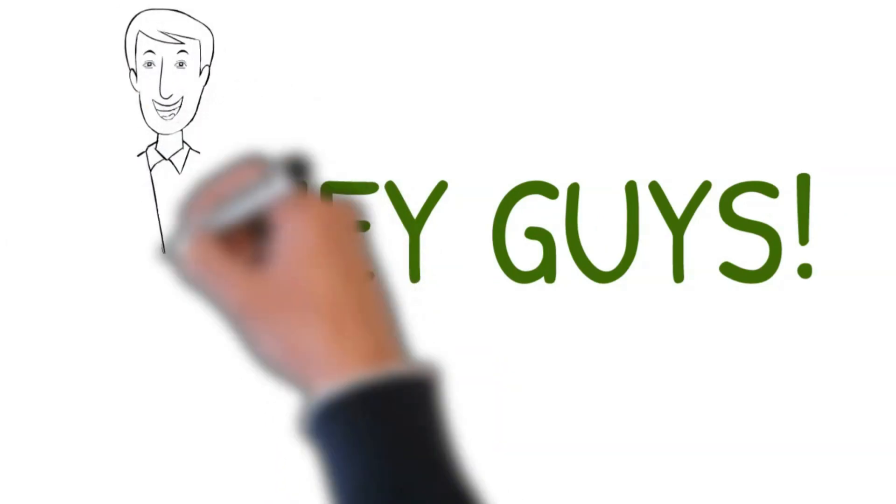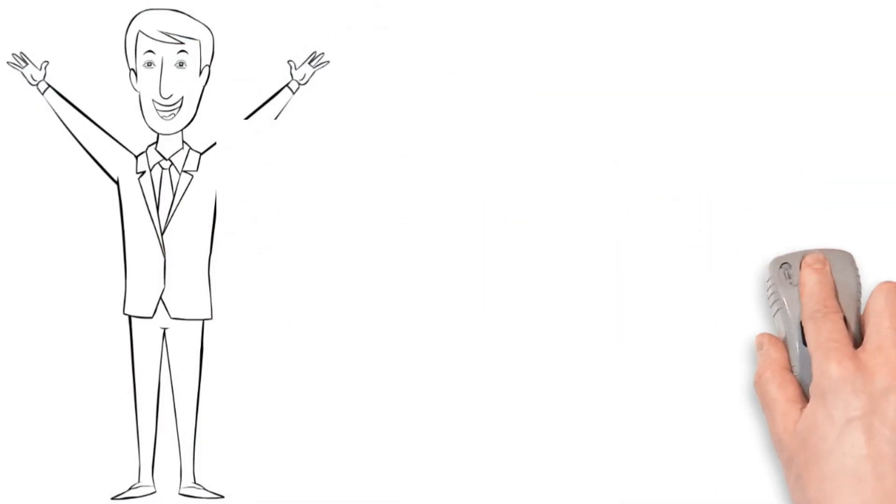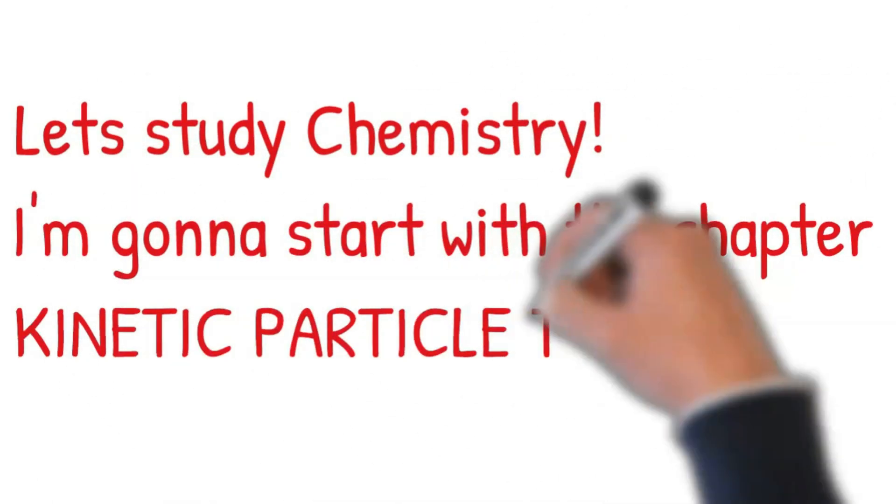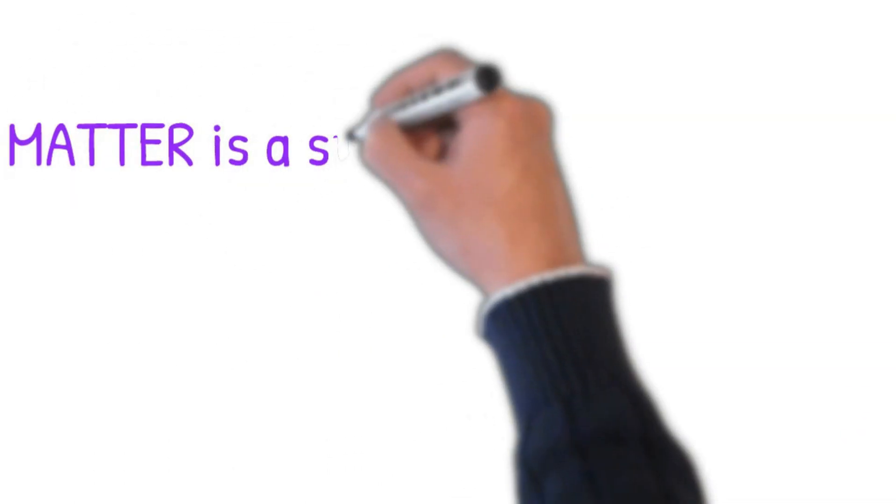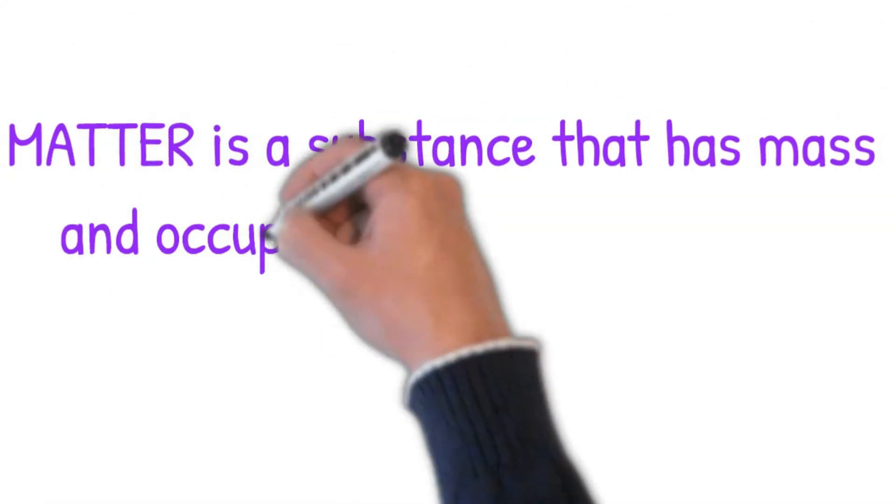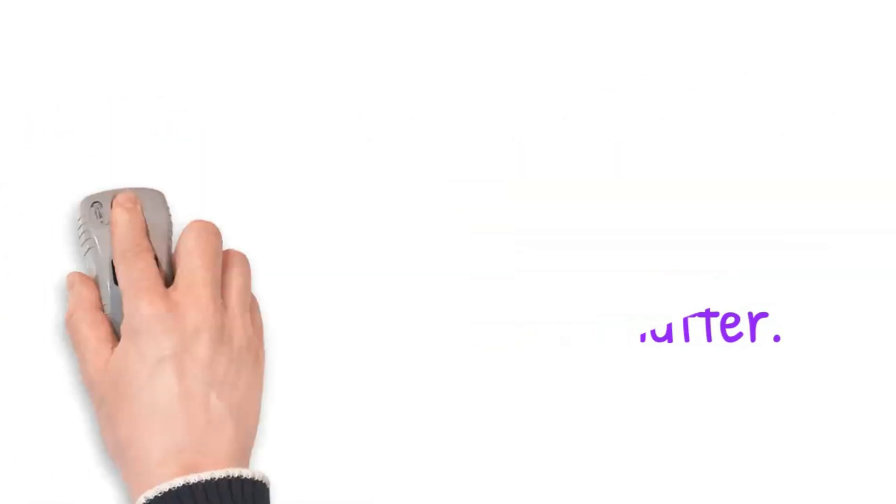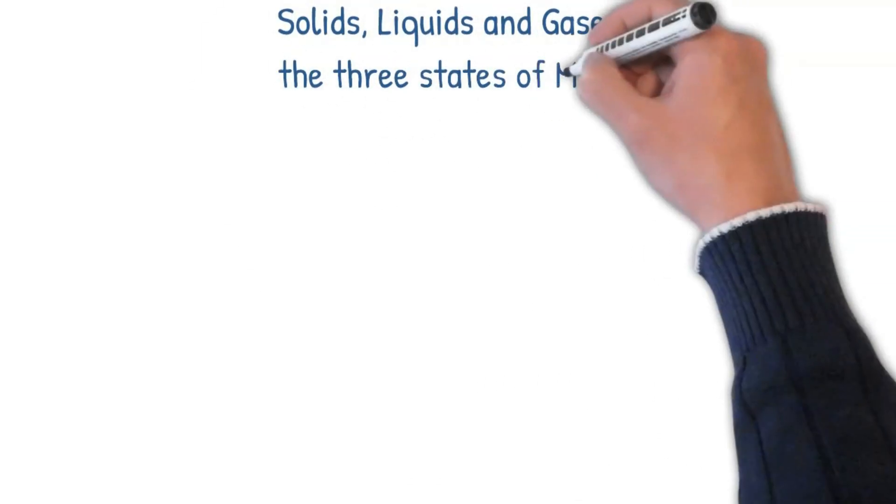Hey guys, let's study chemistry. I'm going to start with the chapter Kinetic Particle Theory. Matter is a substance that has mass and occupies space. All living and non-living things are matter. Solids, liquids, and gases are the three states of matter.